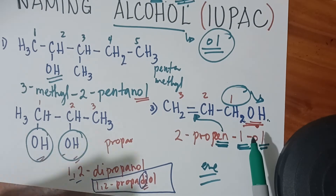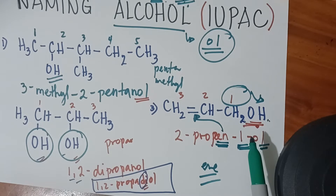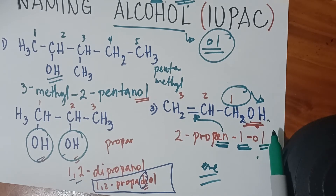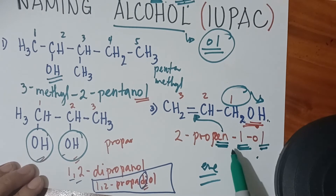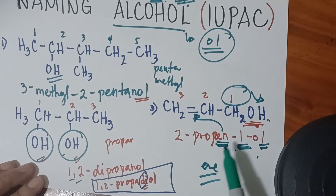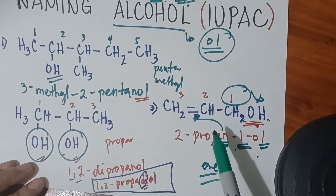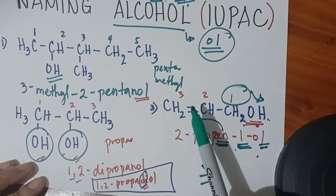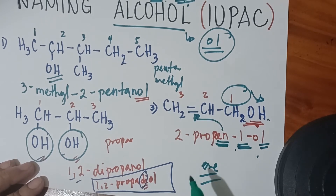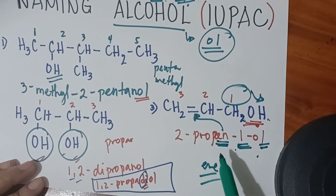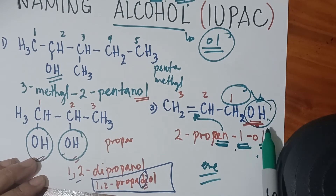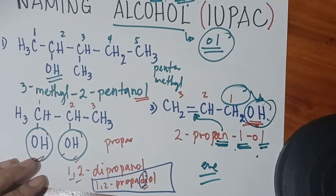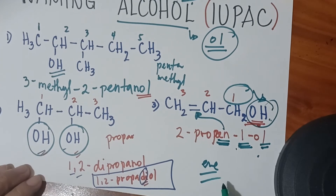Note that the rule is different for naming alkenes and alkynes — for those, the double or triple bond is prioritized. But for alcohols, we don't prioritize the double or triple bond; instead, we prioritize where the OH is located. The OH is always what we prioritize in naming alcohols.